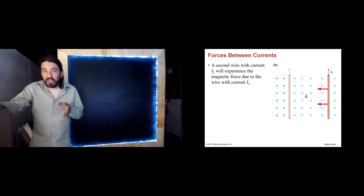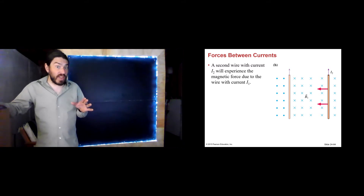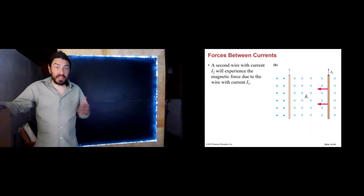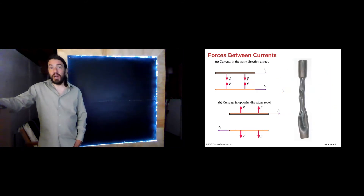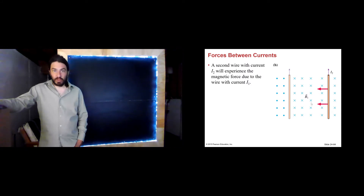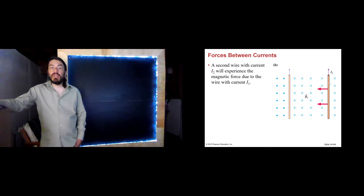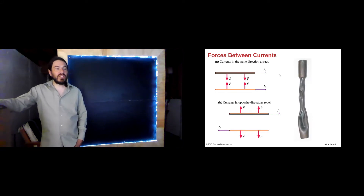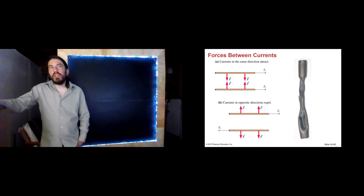In Physics 1, we learned about Newton's Third Law, which says that every single force comes as one member of a pair. If one object exerts a force on another object, then the opposite is true also. So if wire one is exerting a force on wire two, then wire two is exerting a force on wire one. The force on wire one would be to the right — equal and opposite. So two wires carrying currents in the same direction will attract, and two wires carrying currents in opposite directions will repel.